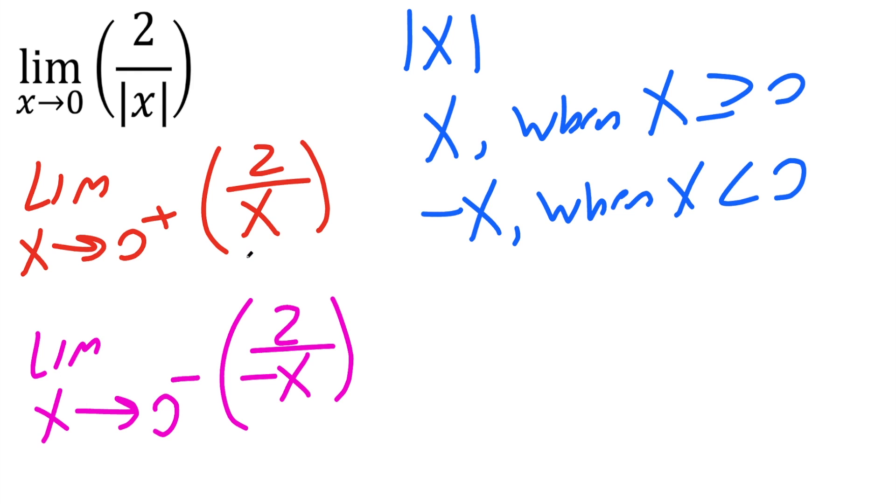So 0 to the right is like 0.000000, repeating 0, 1. So 2 divided by a very small positive number is going to give us infinity. Now let's try this one.